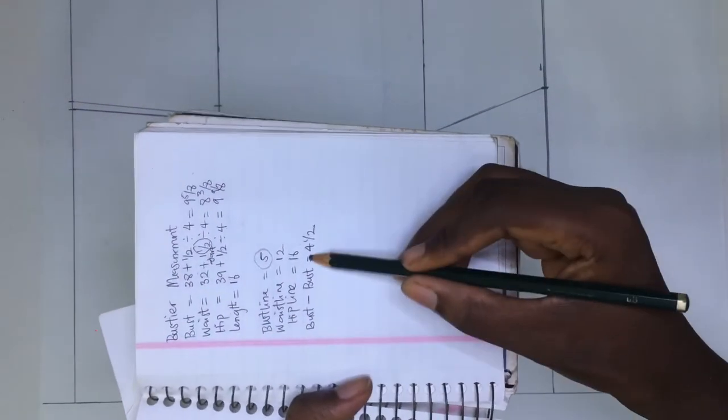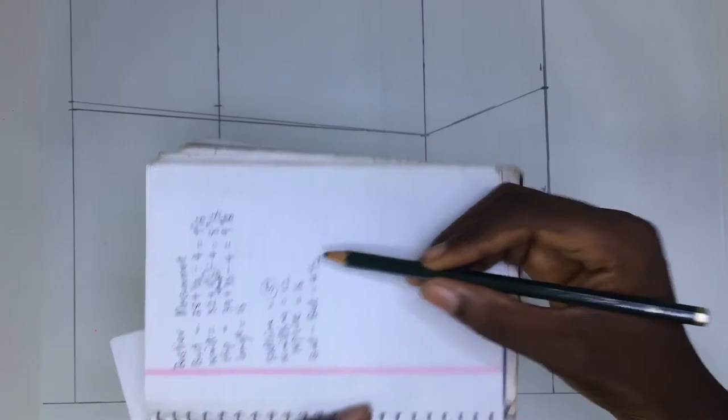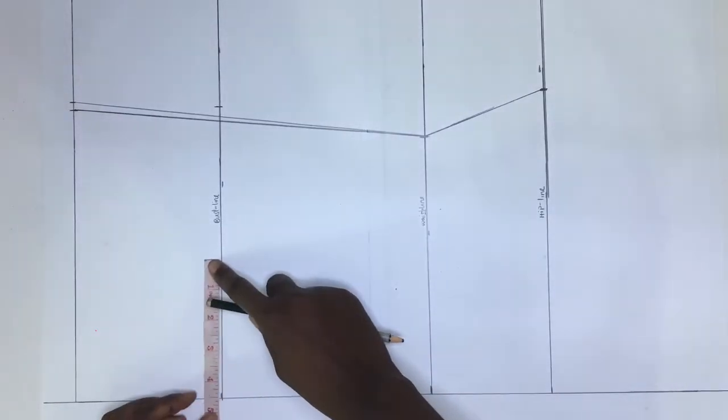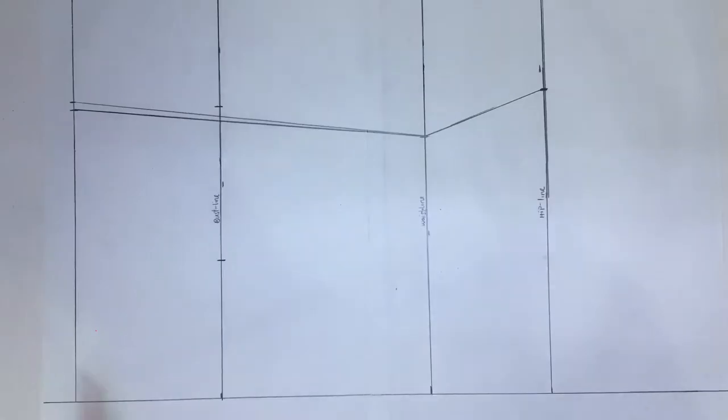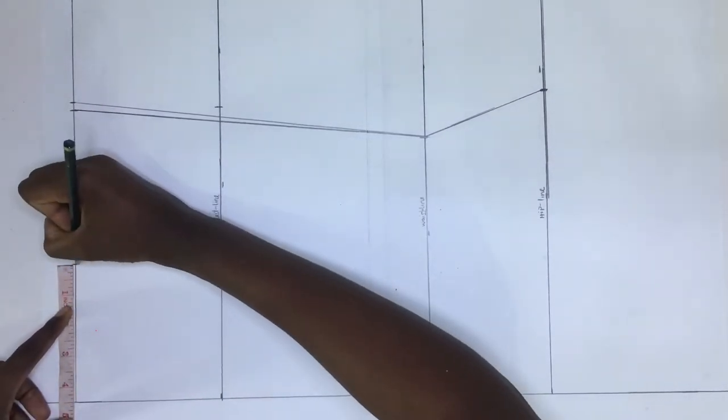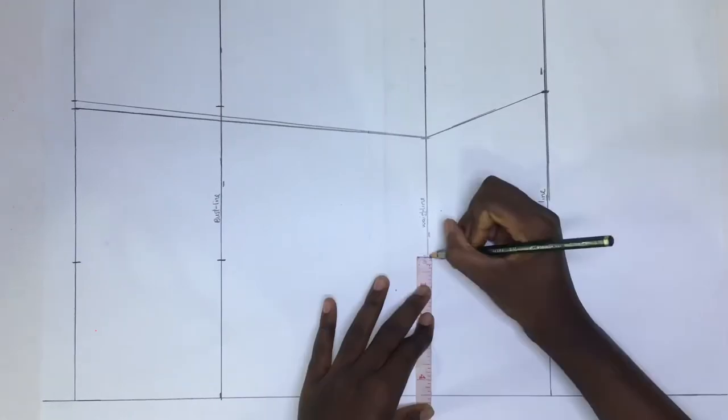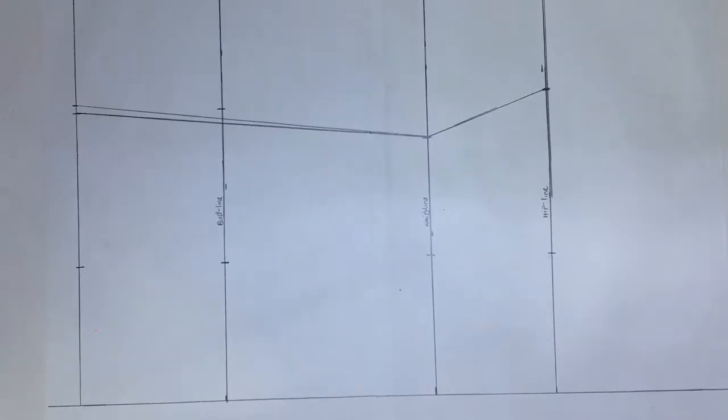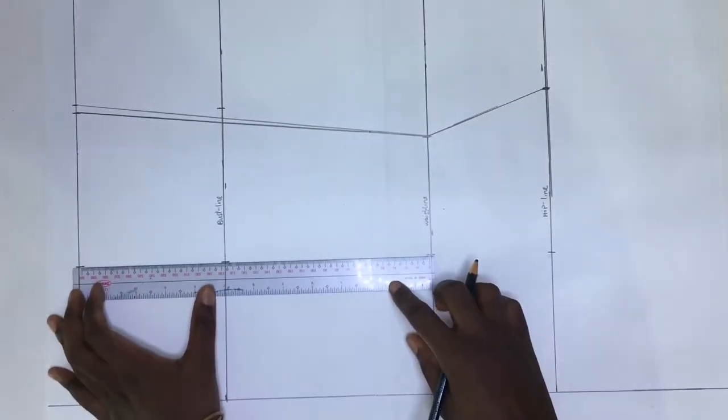For my next step, I'll be measuring my bust to bust measurement, which is four and a half. I marked it from the center front inwards on the bust line. After marking it at the bust line, I then marked it at the top of the pattern paper, the waist, and the hip, and then I drew a line to connect them all.